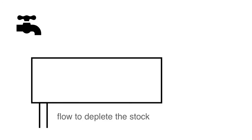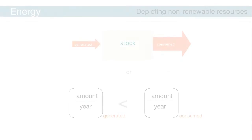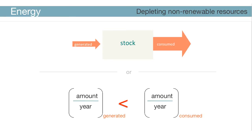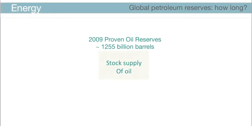It probably makes sense that if you fill the bathtub faster than you drain it, the water is going to overflow. Or if you drain the water faster than you fill it up, you're going to deplete the water in the bathtub. In the same way, an energy resource or stock is considered non-renewable when the rate at which it is being consumed exceeds the rate at which it is being replenished.